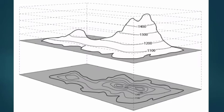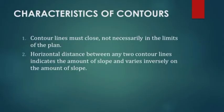So contour line is an imagined line which connects points with equal elevation. Maps with contour lines are called contour maps. This is a typical example of a contour map — another example where the bottom portion is the map and the top portion is the 3D figure from which the map is drawn.